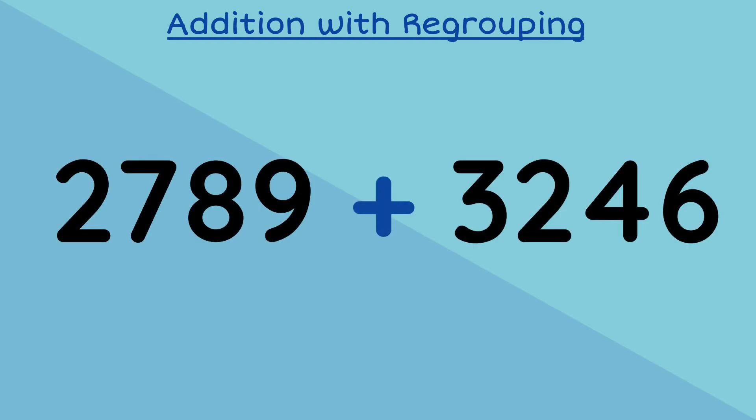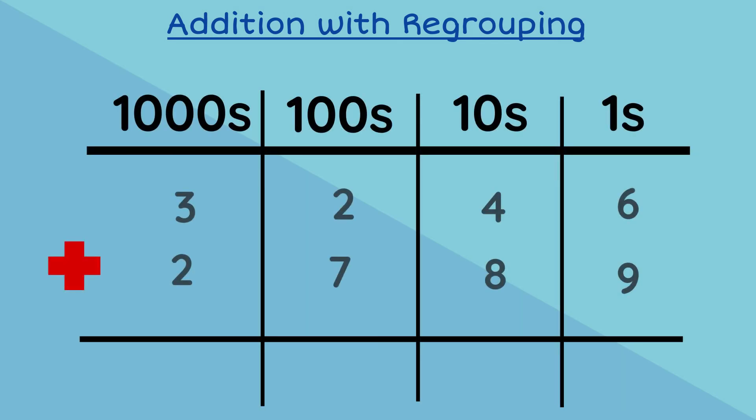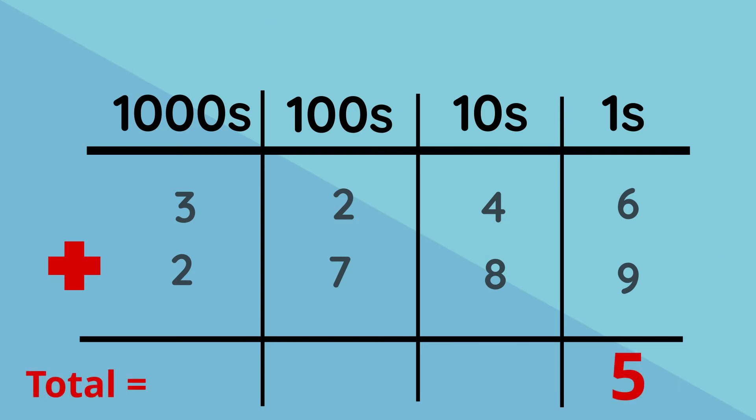Example time, let's add 2789 plus 3246. We place our number sentence into the place value chart and then we begin to add from our ones column going up. Six plus nine equals fifteen. Look, we have a double digit. We must put our second digit five into the answer space of the column we are adding and carry across our first digit one to the tens column.